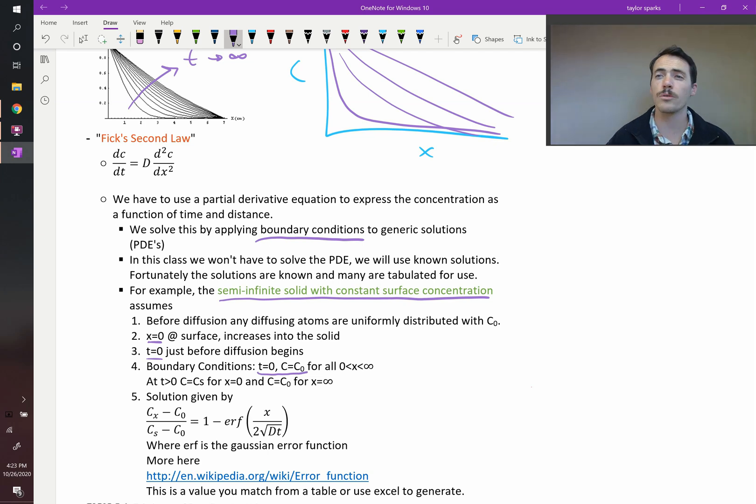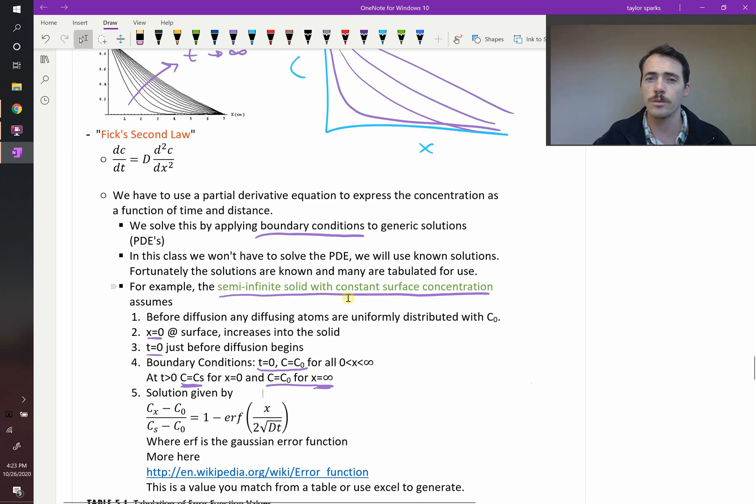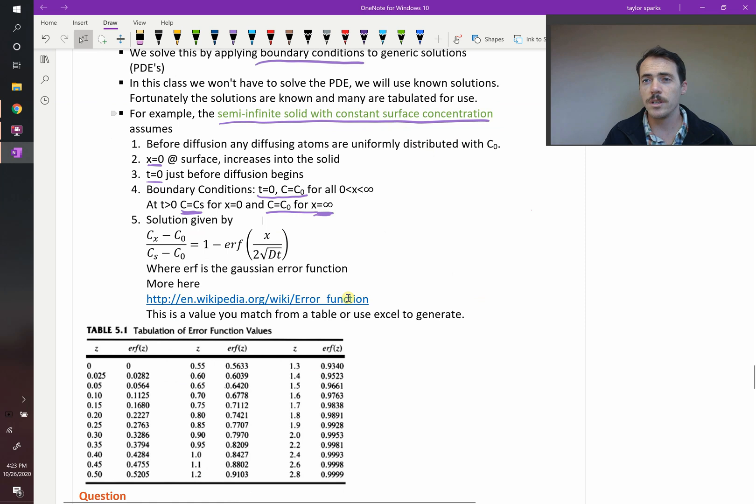And at all times greater than t equals zero, the composition at the surface is held constant, we're going to call it cs. That doesn't change. And far in the material at x equals infinity, the composition still equals this c0 initial value. That's the assumptions we have. So if your scenario doesn't match those assumptions, it's possible that this won't be a very good solution for you to model your diffusion coefficient. Nevertheless, that's what we're going to do in this introductory class.